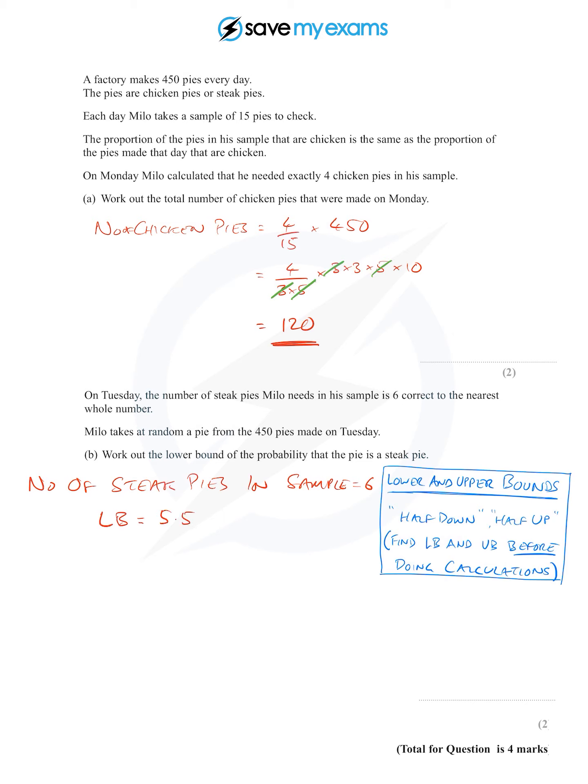The upper bound would be a half up, which is 6.5. He takes at random a pie from the 450 pies made on Tuesday, and we want to work out the lower bound for the probability that the pie is a steak pie.